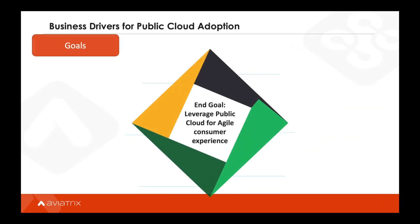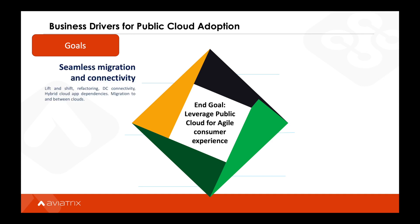Let's take a step back and discuss why businesses move to the public cloud in the first place. The ultimate goal is to deliver an agile consumer experience. They want to use the public cloud to adapt quickly to meet the needs of their end customers. When an enterprise makes the move to public cloud, they typically either move their apps to the cloud as-is — called lift and shift — or they completely rewrite their apps, which is called refactoring.